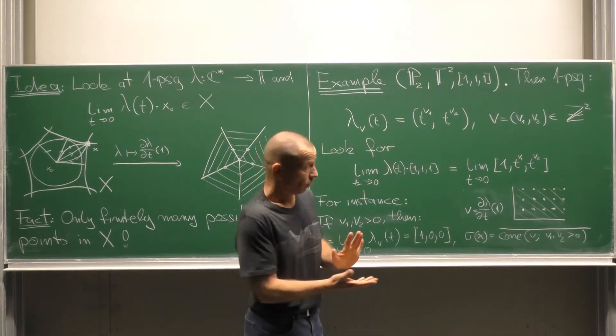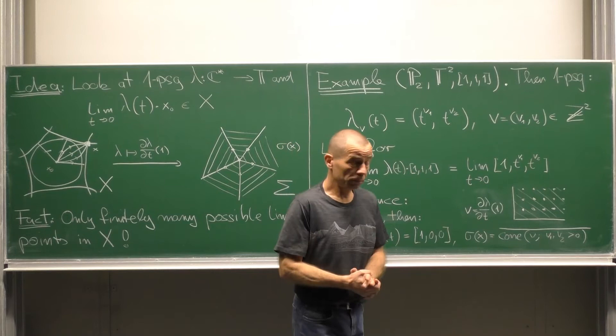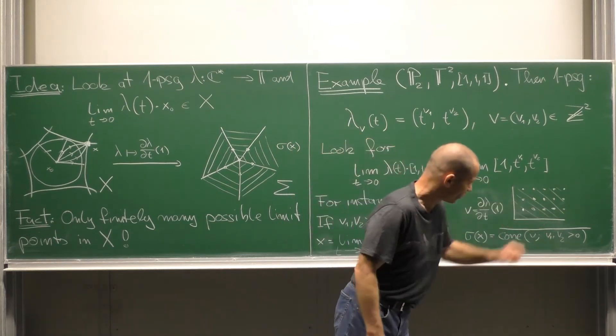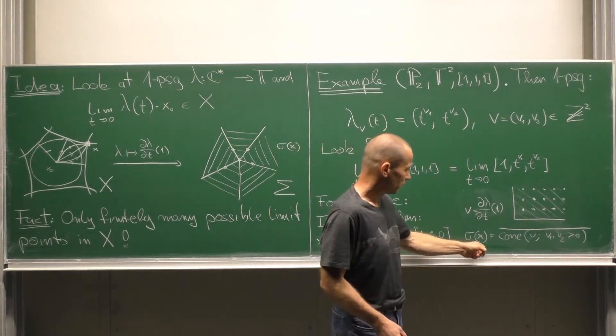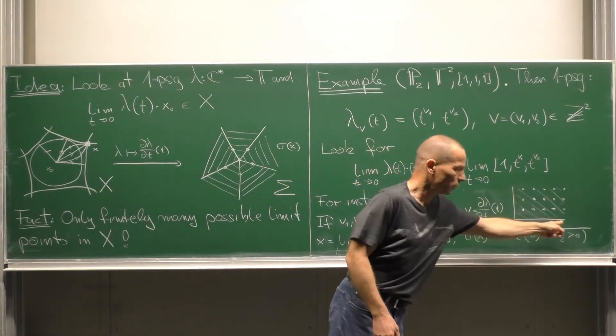The open cone generated by all of them is the open quadrant. And if we pass to the closure we end up with sigma of x being the quadrant.